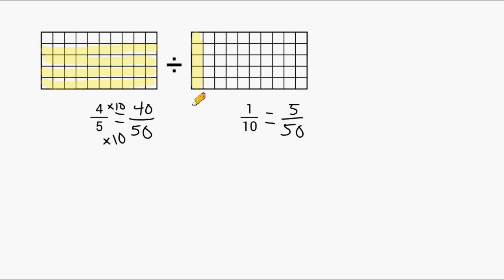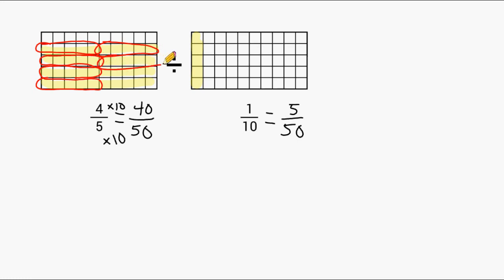Now we figure out how many groups of 1 tenth it takes to make 4 fifths. In one group of 1 tenth, we have 5 square units. Circling 5 square units at a time: here is the 1st group, 2nd group, 3rd group, 4th group, 5th group, 6th group, 7th group, and 8th group of 1 tenth. So it takes 8 groups of 1 tenth to produce 4 fifths.